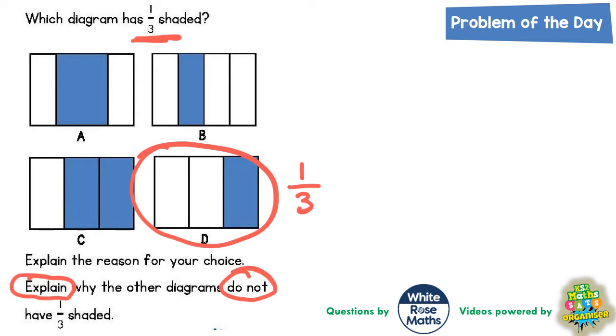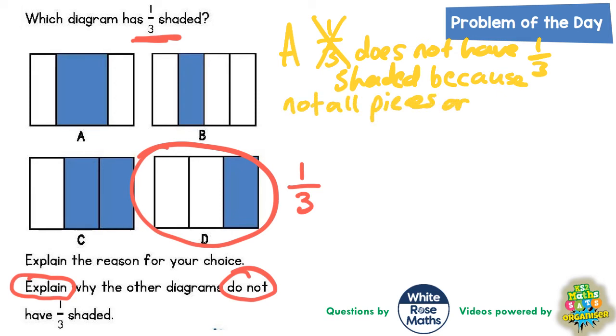But more difficult is to explain why A, B and C do not have one third shaded. So let's take A first of all. Well some people might think that A has also got three pieces and there's only one of them shaded, but the problem is not all of the pieces are the same size because this one in the middle is actually bigger than the other two. So actually A does not have one third shaded because not all pieces are the same size.